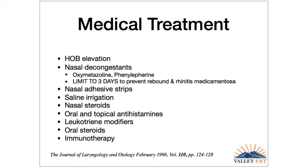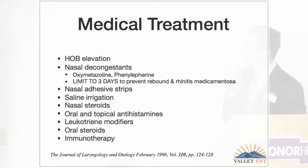Some simple conservative measures: head of bed elevation is very reasonable, especially in elderly patients — studies show even 20% elevation reduces venous congestion in the inferior turbinates and improves the nasal airway. Topical nasal decongestants can be used in very limited fashion, only three days, otherwise patients develop rebound. Breathe-right strips work well for some patients. Saline irrigation and nasal steroids have a very good track record in the literature. Oral and topical antihistamines are not as effective as nasal steroids and saline, but help in the allergic population. Leukotriene modifiers, oral steroids, and immunotherapy are options in the allergic group. For saline, I recommend the NeilMed high-volume, low-pressure irrigation — not just a spray, but a full washout of the nasal mucosa.